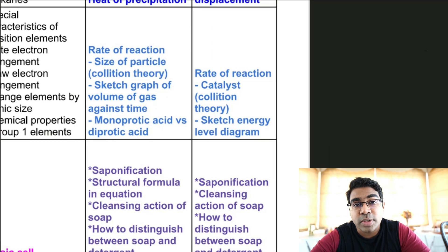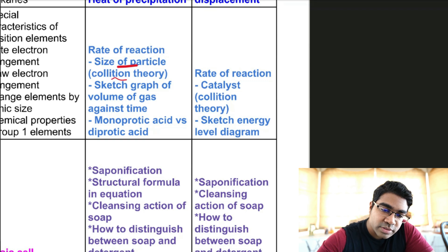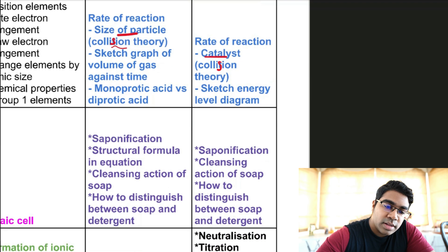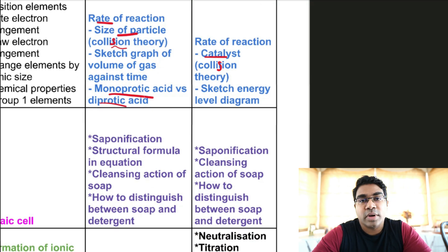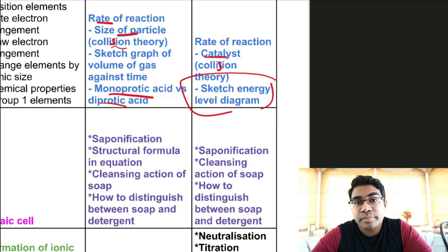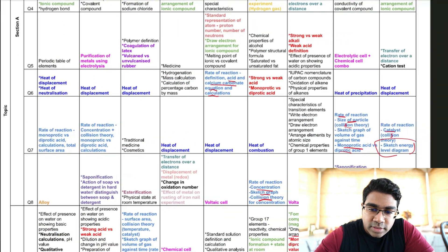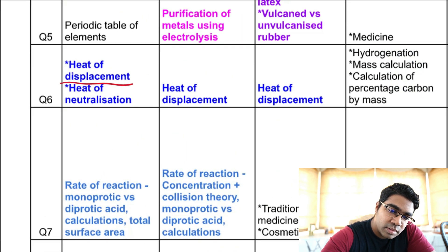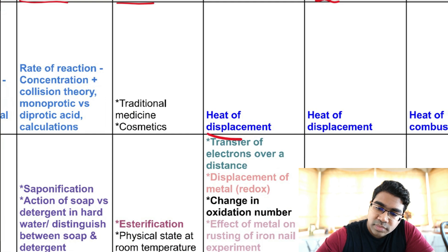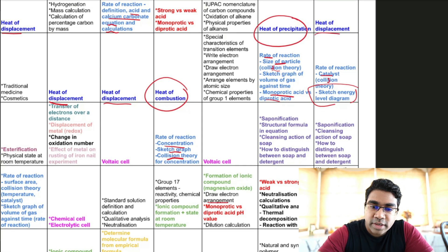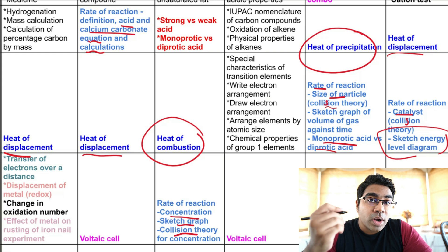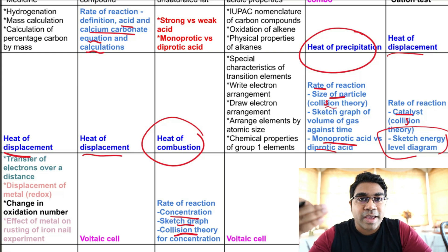Rate of reaction continues here — size of particle in relation to collision theory, catalyst and collision theory, and rate of reaction linked to monoprotic acid and diprotic acid. There was also one question on energy level diagram within the rate of reaction topic. So make sure you know your collision theory across all the different factors.